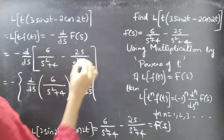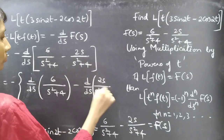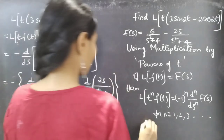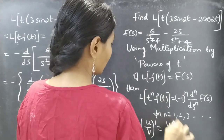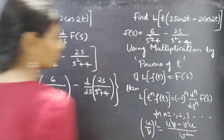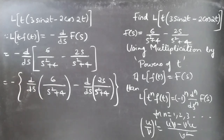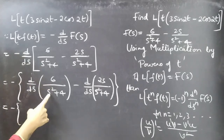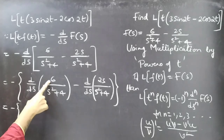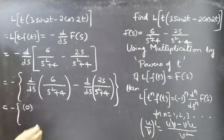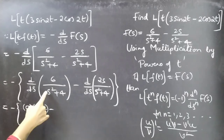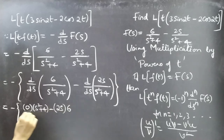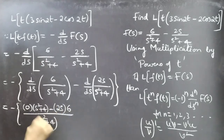We apply the u/v quotient rule, which is (u'v minus v'u) divided by v². For the first term 6/(s²+4): the derivative of 6 with respect to s is 0, so 0 times (s²+4) minus the derivative of (s²+4) which is 2s, times 6, all over (s²+4)².